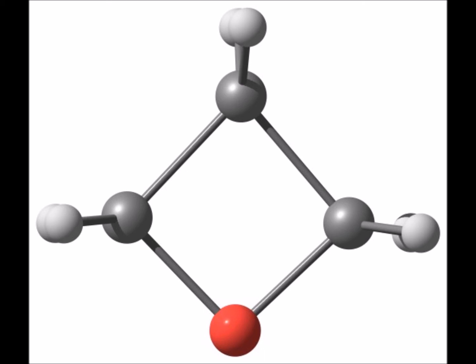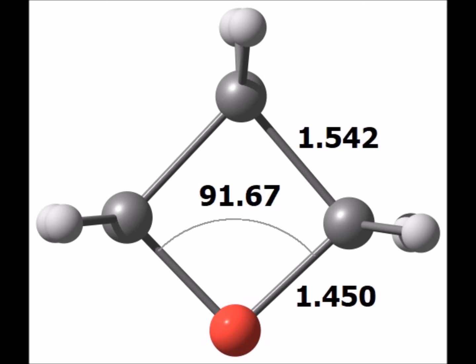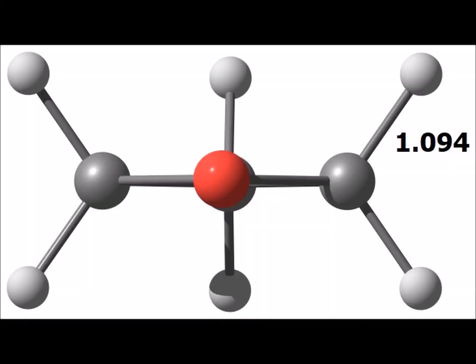The resulting product is oxetane. Here we see the computed parameters of oxetane — most notably, the very nearly right angles of each of the bond angles in the four-membered ring. This end-on view shows that the four-membered ring is almost entirely planar.